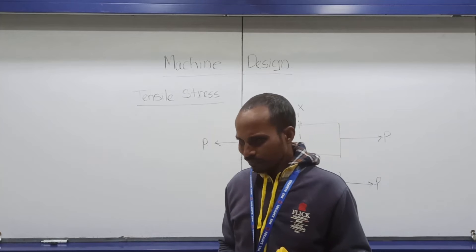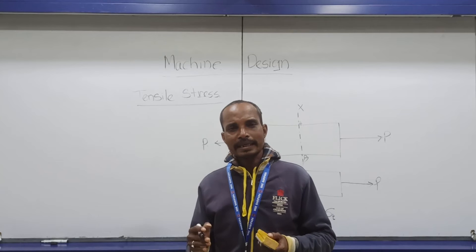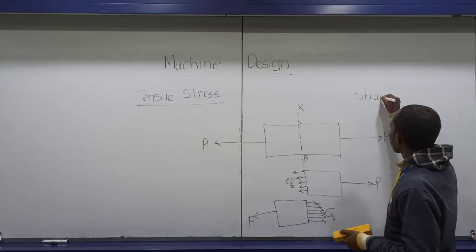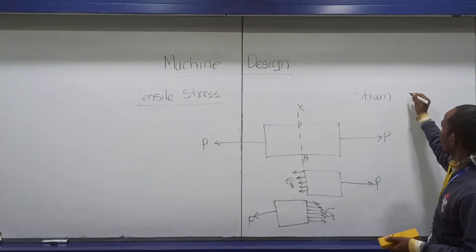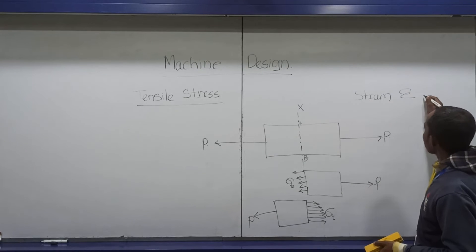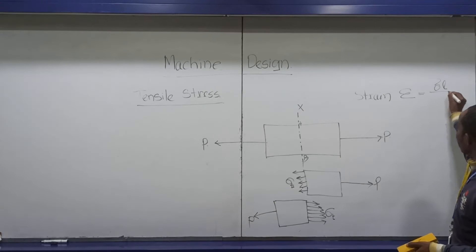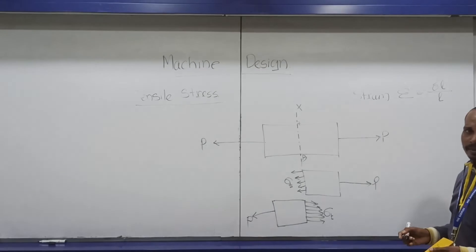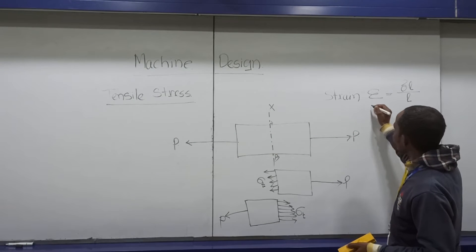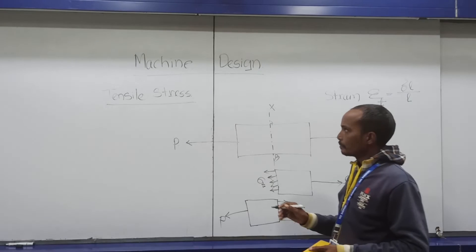If there is stress then there must be strain. Strain is nothing but the ratio between the change in length to the original length. It is a simple ratio of change in length to original length. Strain is denoted by the Greek letter epsilon. In this case, change in length is delta L and the original length is L. So tensile strain is equal to delta L by L.